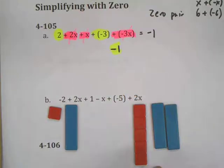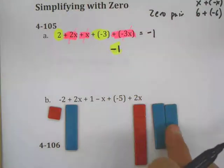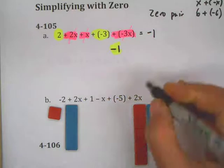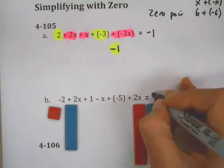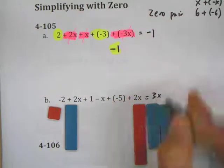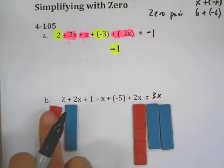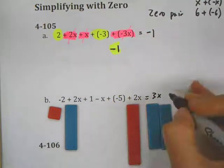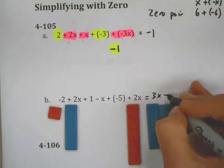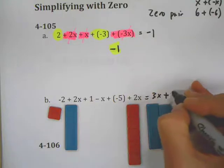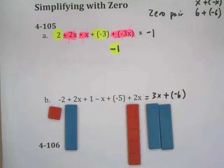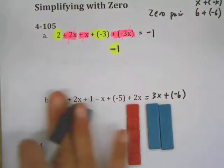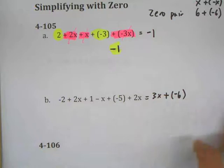I can see I have a positive x and a negative x — that's a zero pair. I have a plus one and a negative one — that's a zero pair. Then I combine my like terms. I have one x, two x, three x's — so this equals three x's. Negative one plus a negative five gives plus negative six.